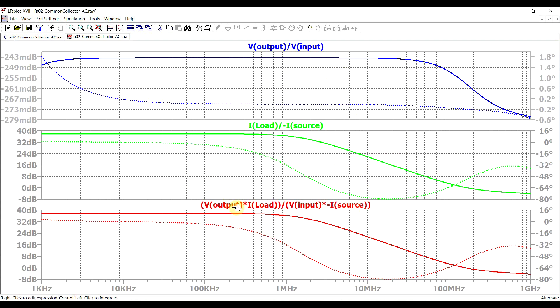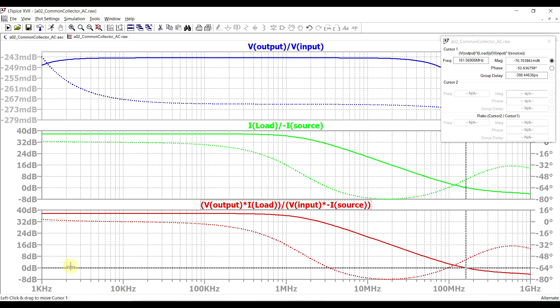We can see that the combined graph, the one for power, also shows a similar response to the current graph. We can see again that our unity power gain point is at around 160 megahertz this time.